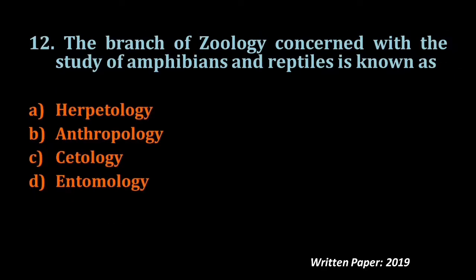Question number twelve: The branch of zoology concerned with the study of amphibians and reptiles is known as — herpetology, anthropology, cytology, or entomology. Anthropology is the study of humans; cetology deals with marine mammals; entomology is the study of insects. The study of amphibians and reptiles is known as herpetology.